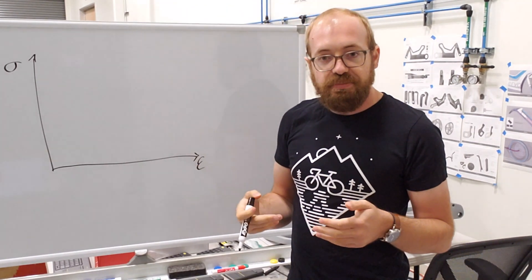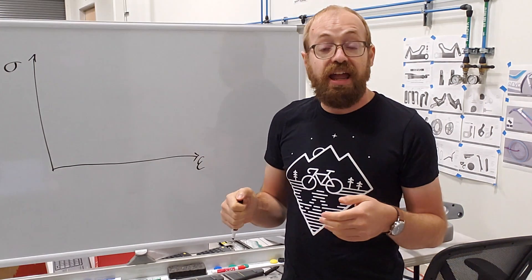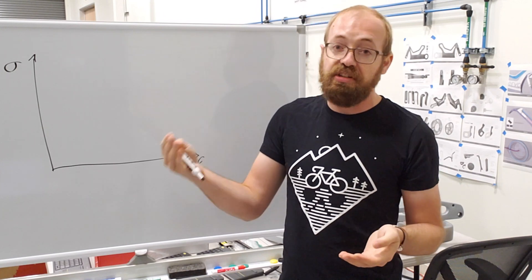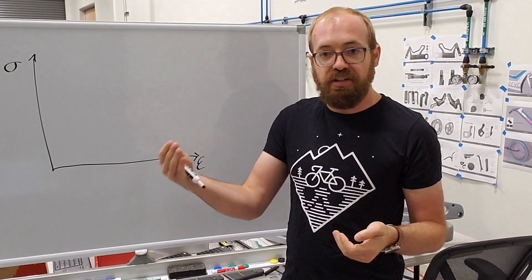Engineers will further characterize materials in terms of how they fail. A structure might fail more brittlely or more ductilely. Brittle failure, ductile failure.